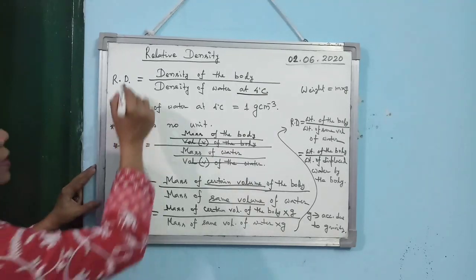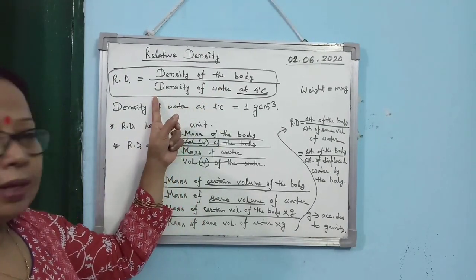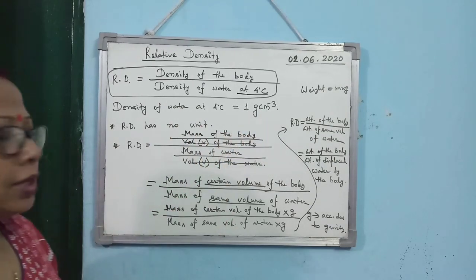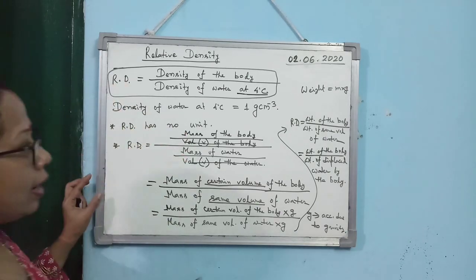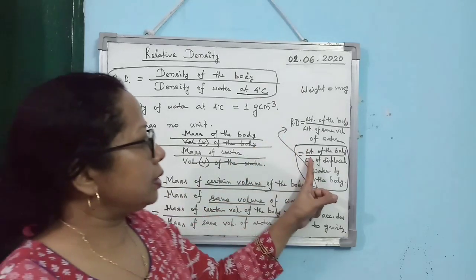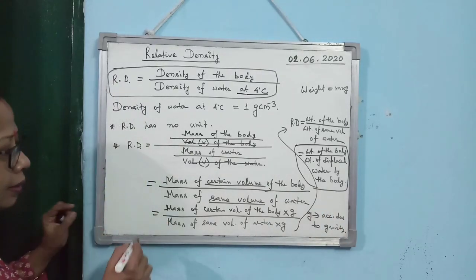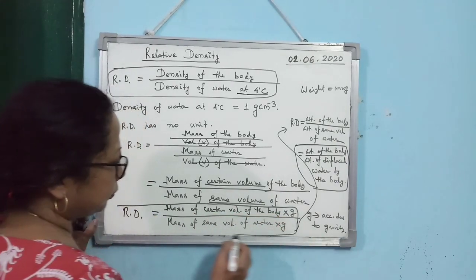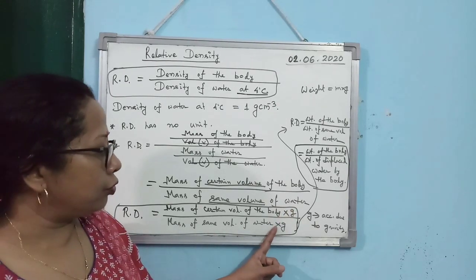To summarize, you must learn and remember: relative density is density of the body divided by density of water at 4 degrees Celsius. Why 4 degrees Celsius? Because at 4°C, density of water is 1 gram per centimeter cube. The last expression — relative density equals weight of the body divided by weight of displaced water — must also be remembered. Additionally, RD equals mass of a certain volume of the body into G, divided by mass of the same volume of water into G, and cancelling G gives mass of the body divided by mass of the same volume of water.